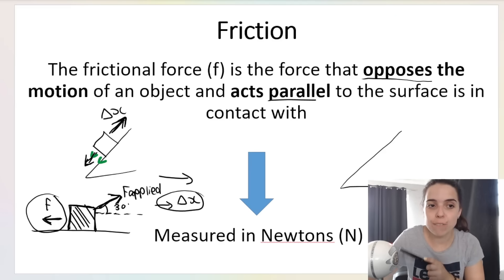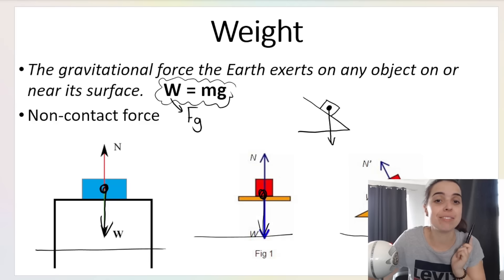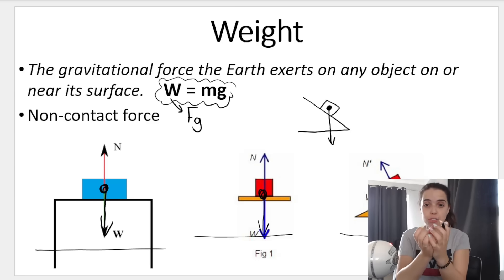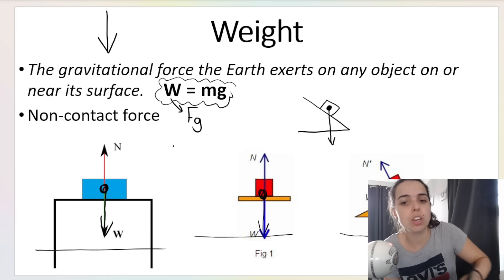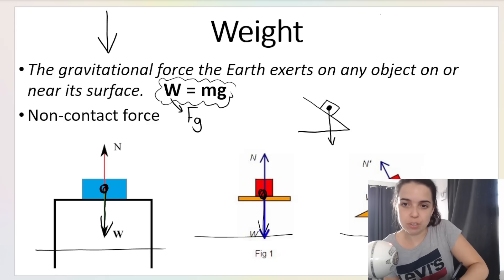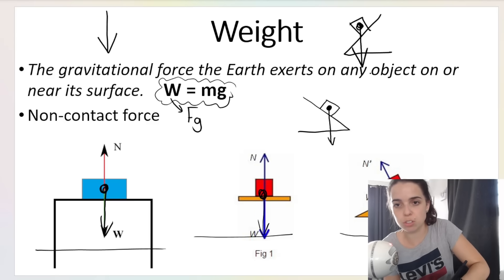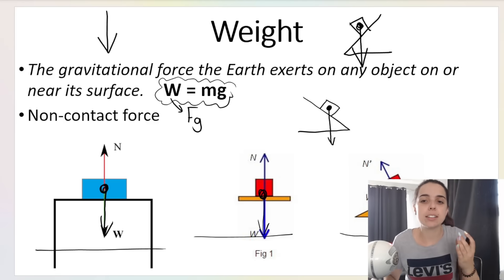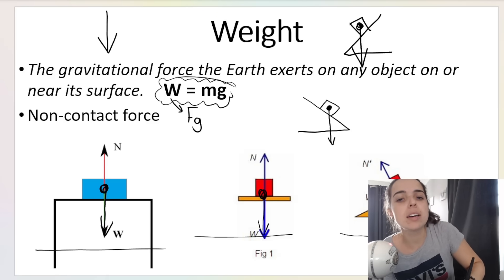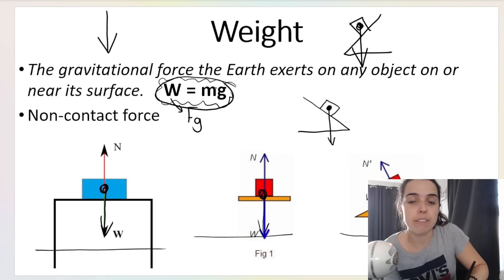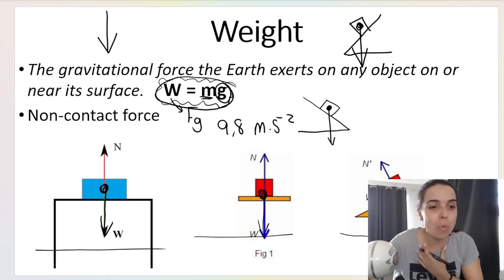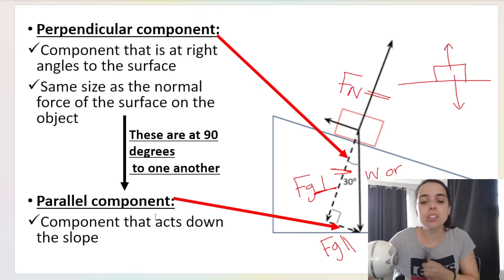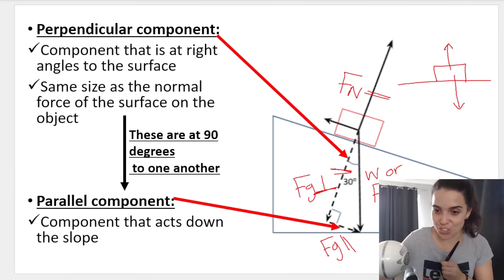Then we've got our non-contact force, which is weight. Weight is the gravitational force the earth exerts on any object near or on its surface. The direction for weight is always straight down toward the earth — not perpendicular to the surface. So no matter what the surface looks like, weight goes straight down. The formula to calculate weight is mass times gravitational acceleration: W = mg, where mass is in kilograms and g on earth is 9.8 m/s² downward. In another video I'll show you how to resolve weight into its components, which is super important for Newton's laws questions.